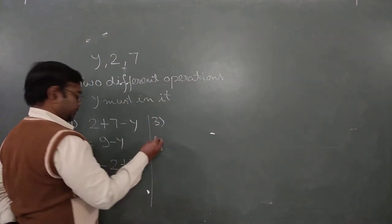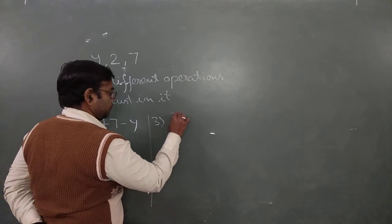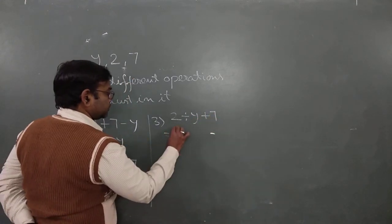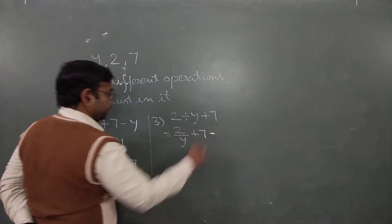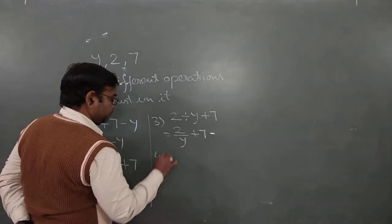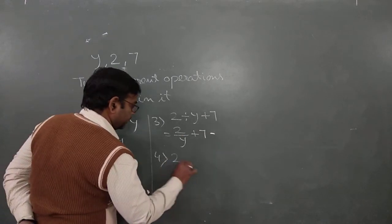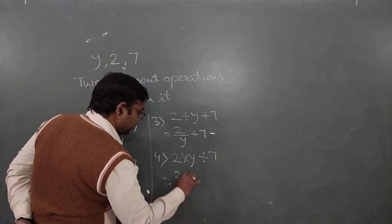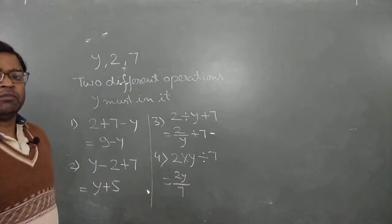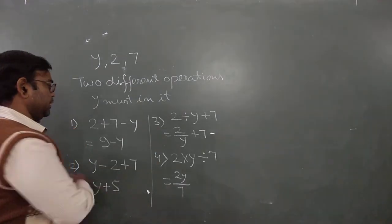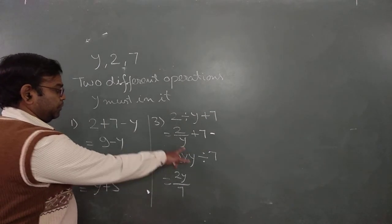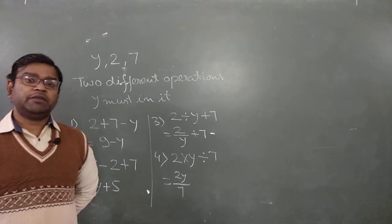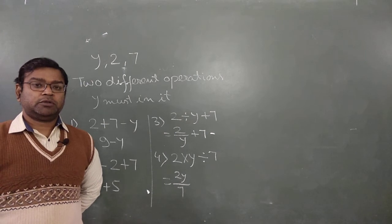Third expression using division: two divided by y, plus seven — written as 2/y plus 7. We can also reverse it: two into y divided by seven, which is 2y divided by 7, written as 2y/7. Likewise you can form more expressions using two different signs with y present. Read the statement carefully, then form the expression.